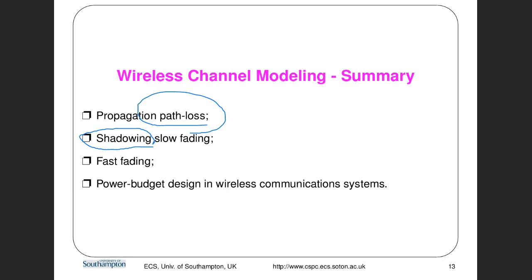Shadowing effect is modeled by log-normal distribution. It is a sudden signal power blockage caused by buildings or any obstacles in the environment. The third level is small-scale fast fading, which happens because of multipath effect. You have many copies of reflected signals and they all arrive with different delays and with different phase rotations.